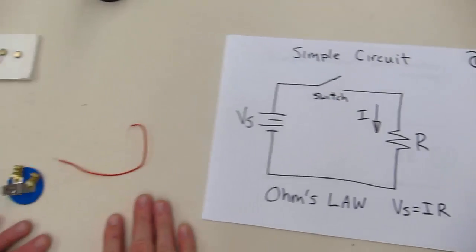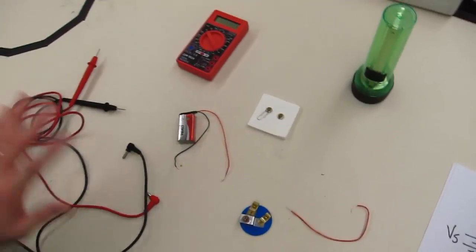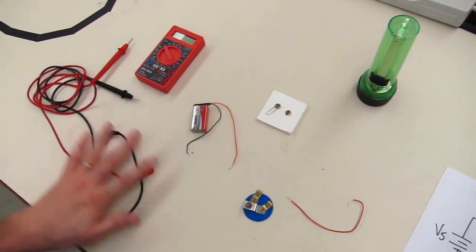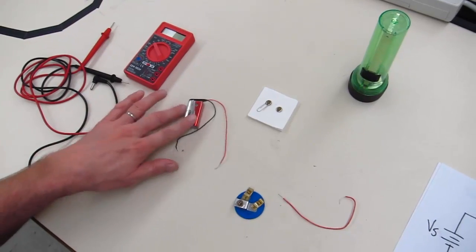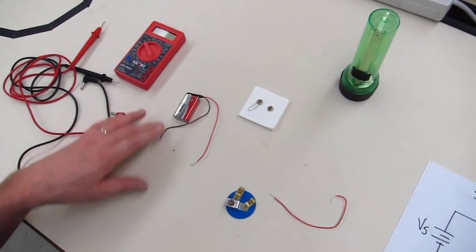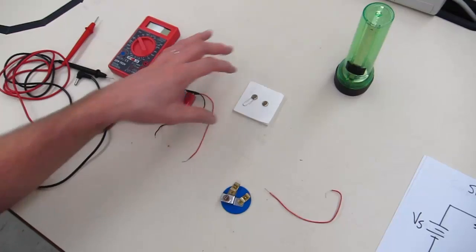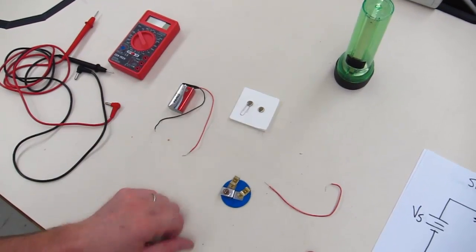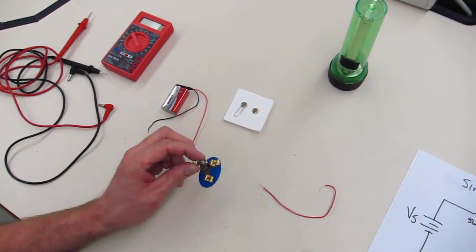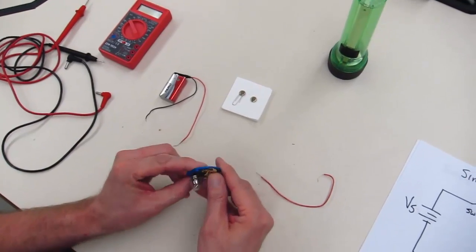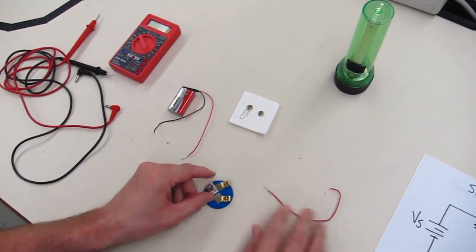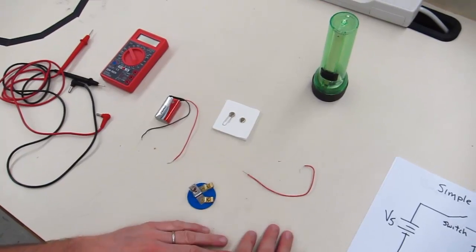All right, so let's look at our supplies here. What I have with us is a small meter, the probes that go along with that, 9-volt battery and its wiring, a simple switch, a small bulb holder with fondstock clips to make connections, and an extra wire. So we're going to complete this circuit.